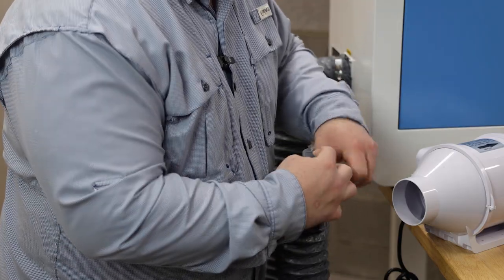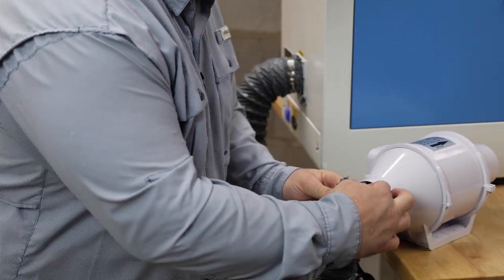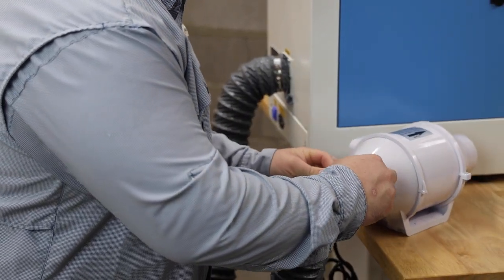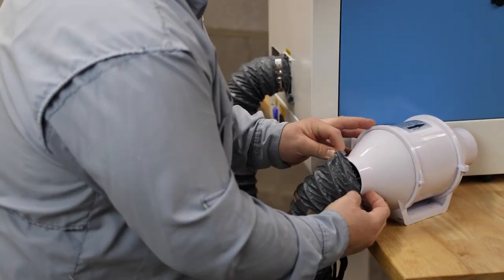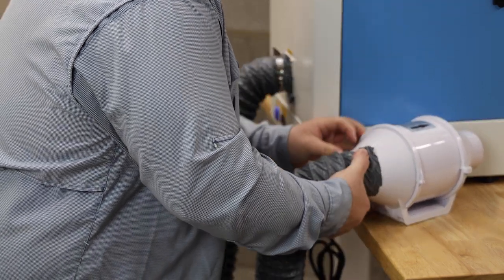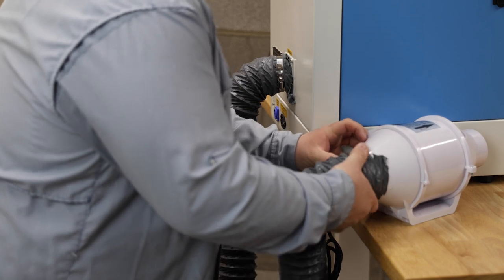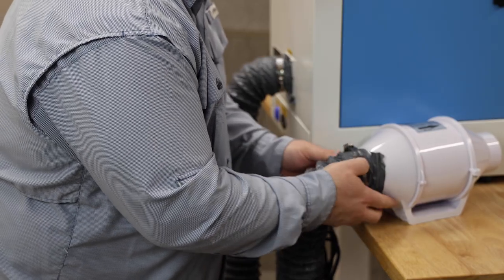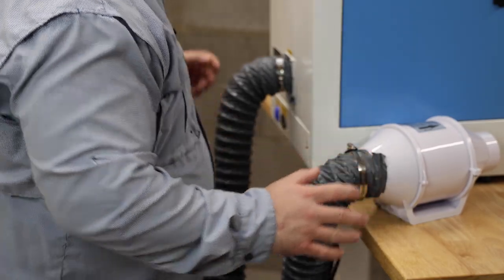And you just do it pretty much the same way that you did on the back of the laser. Just work it on there the best that you can. Sometimes you have to fiddle around with it a little bit before you can get it on there, but just slide it up around there and then slide your hose clamp up to the top of it. And then we just tighten it down just like we did on the laser.